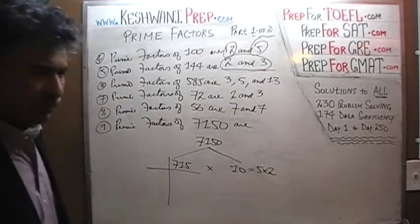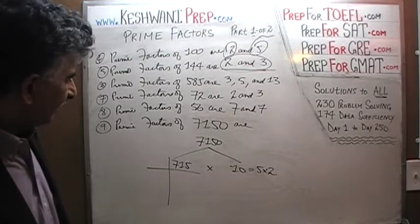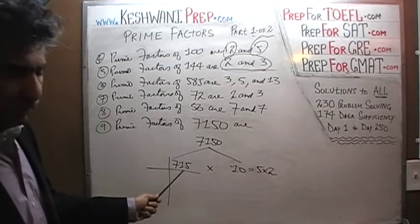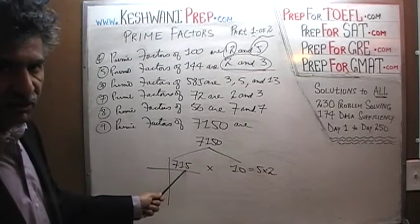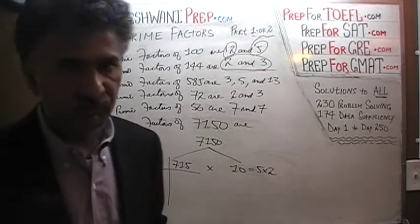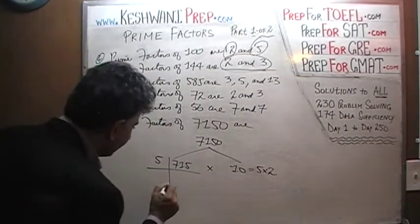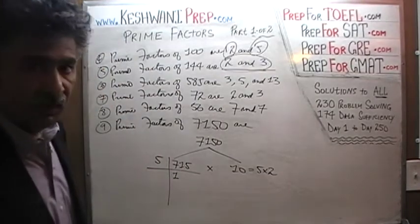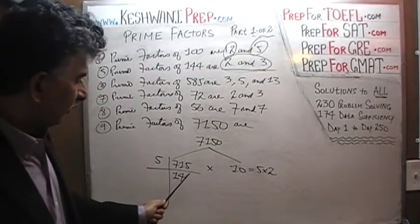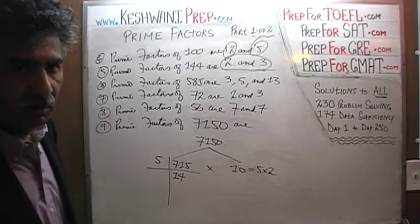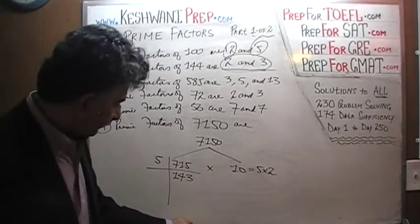Can we divide 715 by 2? Obviously not — it's an odd number. Can we divide it by 3? 7 plus 1 plus 5 is 13, and 13 is not divisible by 3. So 715 is not divisible by 3. We divide it by 5: how many 5's in 7? 7 has one 5; the remaining 2 joins the 1 to become 21. 21 has four 5's — 4 times 5 is 20; the remaining 1 joins the 5 to become 15, and 15 has three 5's. We get 143.